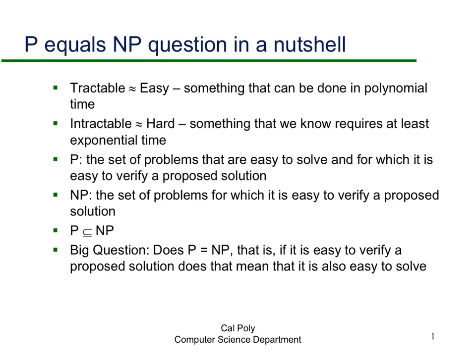Now consider the set NP — problems for which it's easy to verify a proposed solution. For example, with the traveling salesperson problem, it's easy to verify whether a given tour of a graph has length less than 100. However, it's difficult to solve — we don't know how to solve it in polynomial time. So TSP is in NP, but right now we don't know whether it's in P.